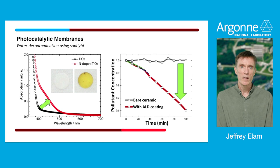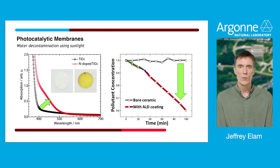We've created a coating which imparts these properties. As you can see in the graph on the left side, this coating makes the membrane much more absorptive of visible light and gives it a yellowish appearance. At the same time we maintain those photocatalytic properties, so that when we apply this coating the rate of decomposition of the pollutants under visible sunlight is much greater.